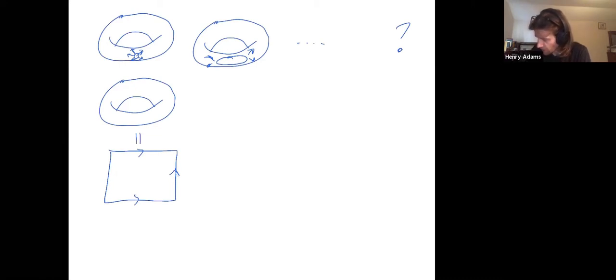Let me draw these arrows better. So what I mean by this is when I identified the top with the bottom, I identified that point with here, this point with here, this point with here. And then when I identified the right and the left, I identify this point there, this point here, this point here. And that's what I mean by this.